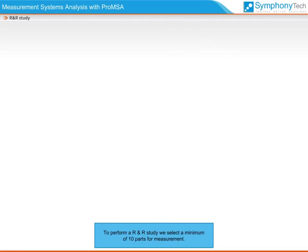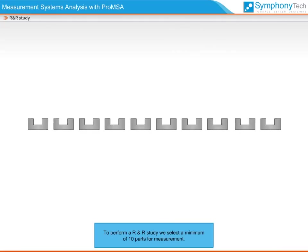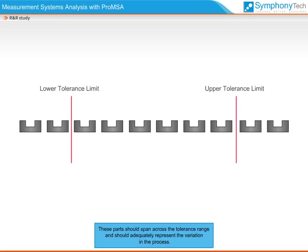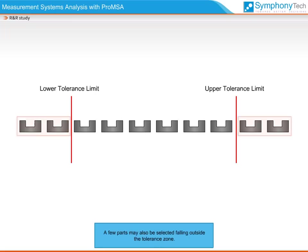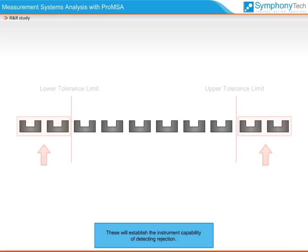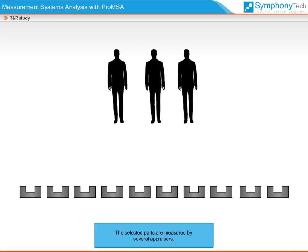To perform an R&R study, we select a minimum of 10 parts per measurement. These parts should span across the tolerance range and adequately represent the variation in the process. A few parts may also be selected falling outside the tolerance zone. These will establish the instrument's capability of detecting rejection. The selected parts are then measured by several appraisers.